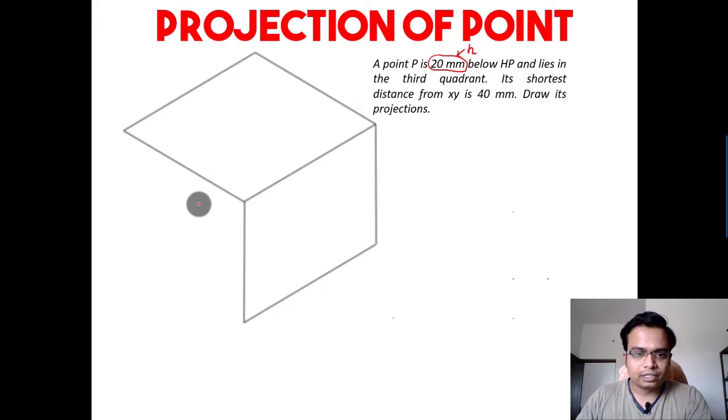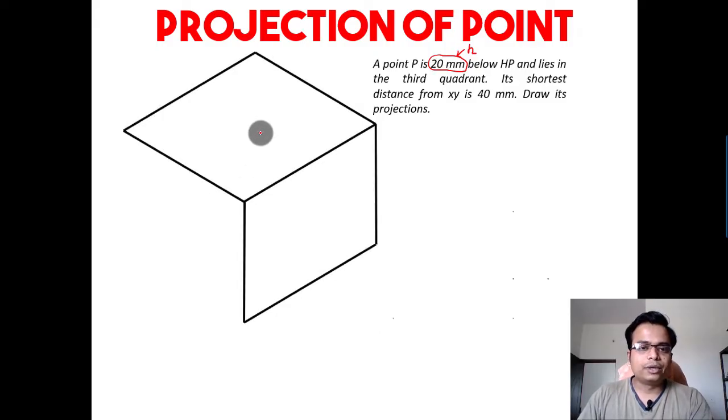Let me make it more realistic for you all. This over here is the third quadrant, this is the horizontal plane, this over here is the vertical plane, and there is going to be a point which is going to be below the HP and behind the VP. It will fit in a profile plane also - HP, VP, and a profile plane.